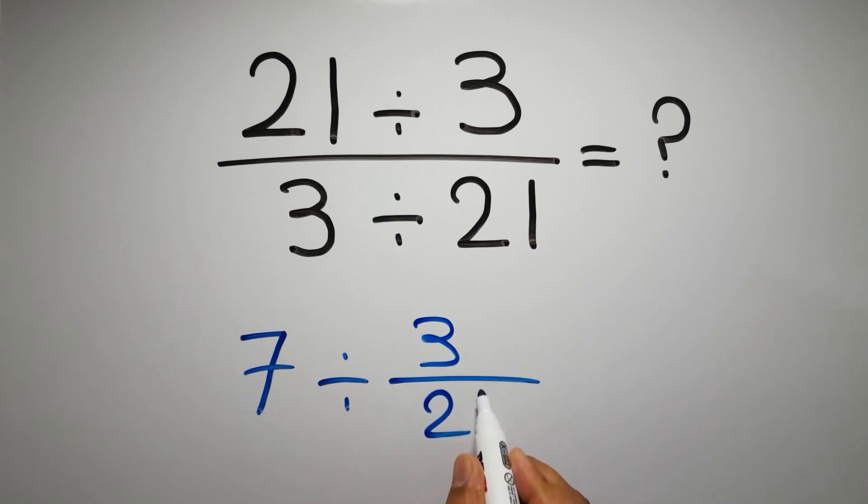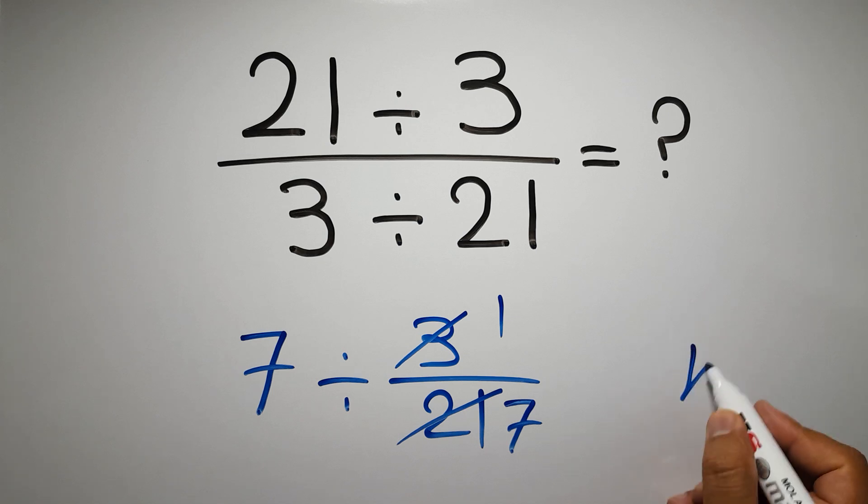So we have 7 divided by 3 over 21. 3 divided by 3 gives us 1, and 21 divided by 3 gives us 7. So we have 7 divided by 1 over 7.